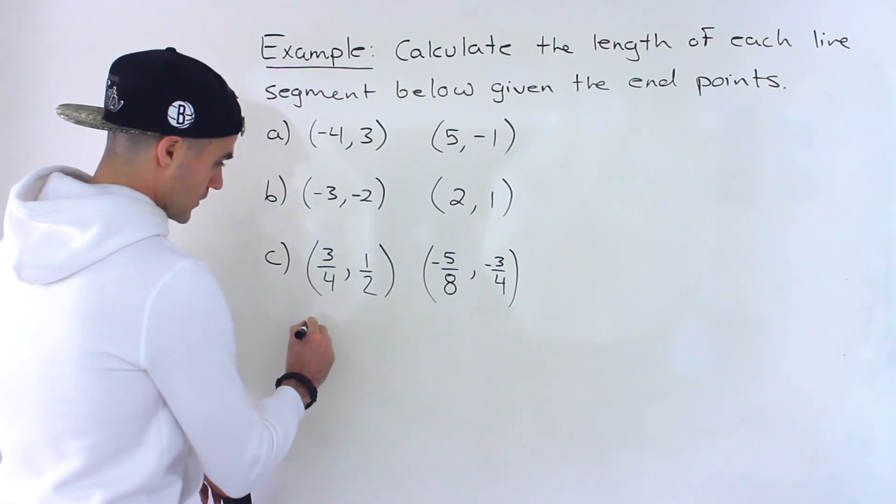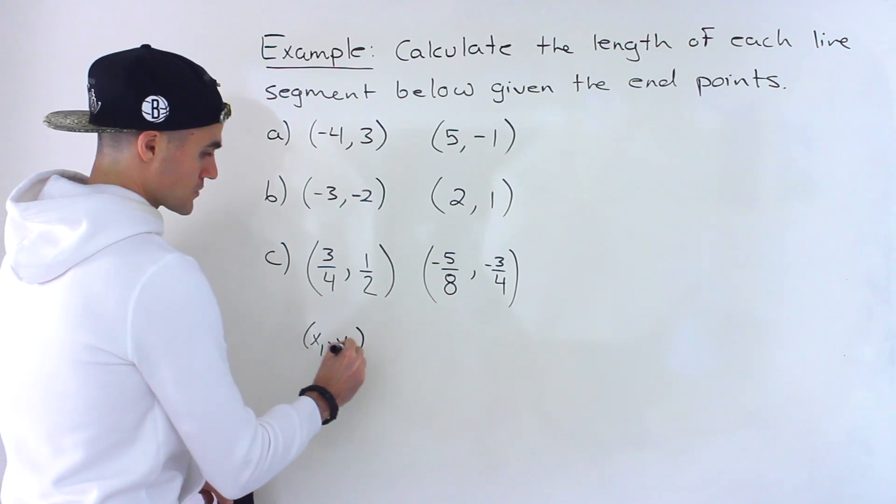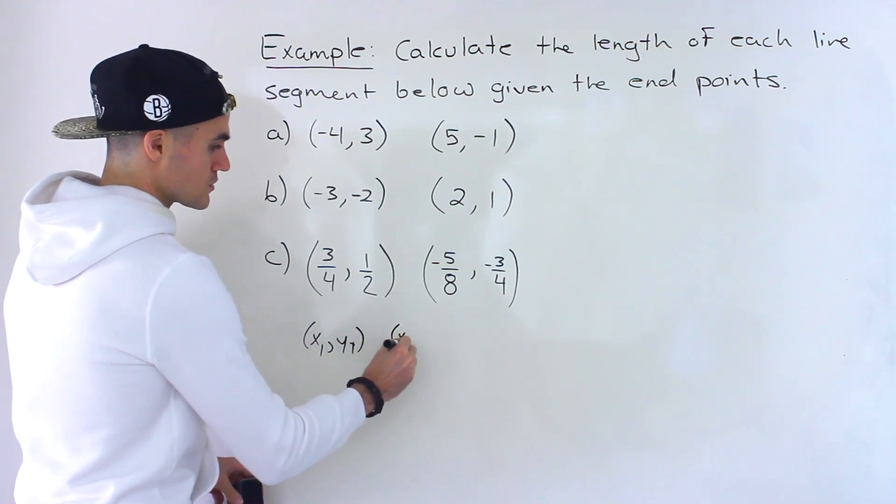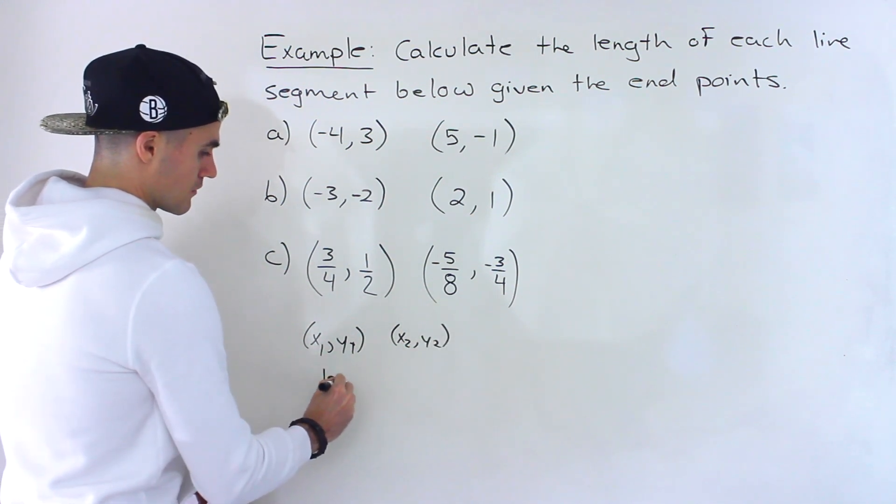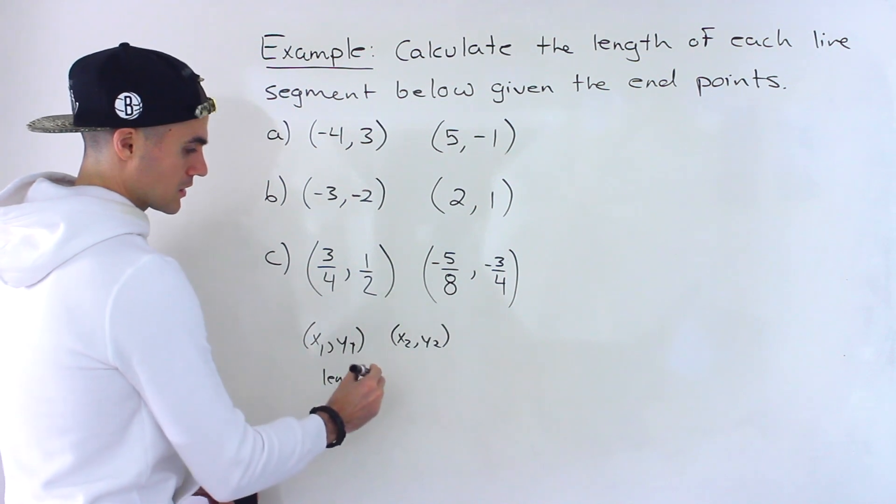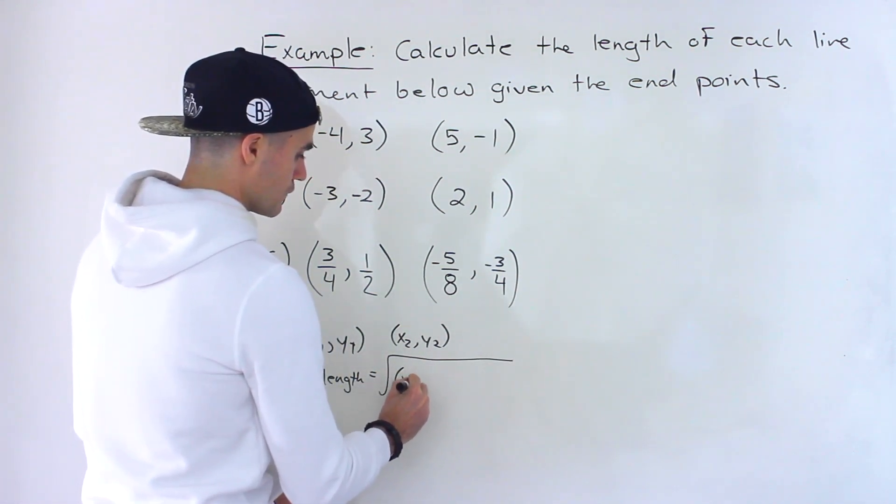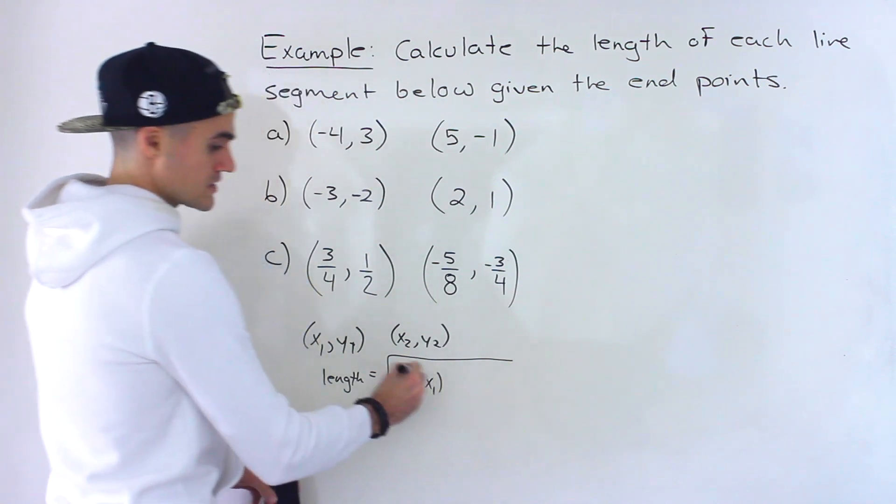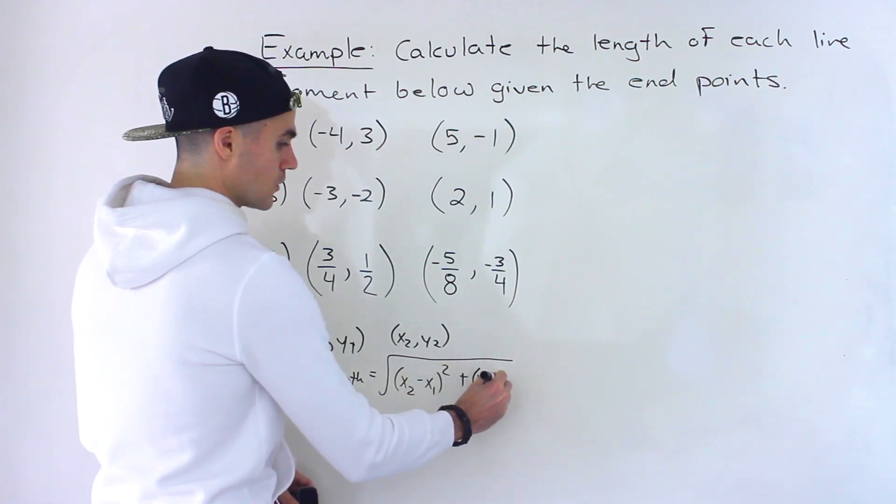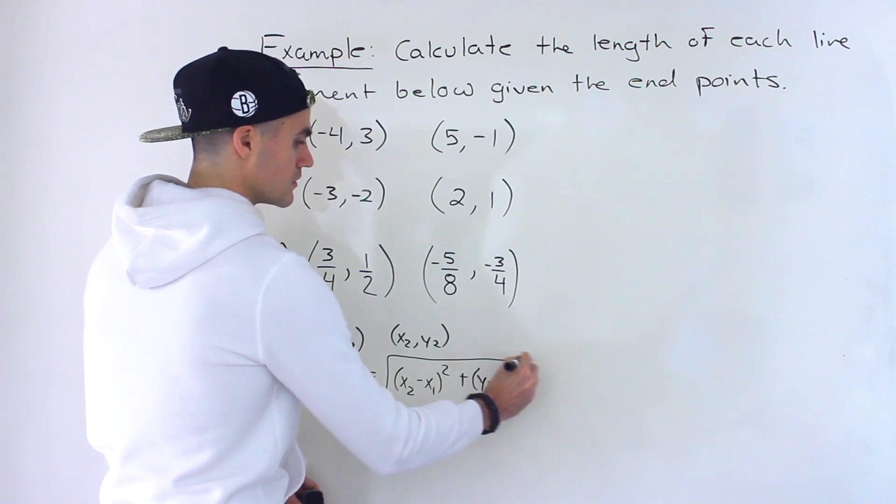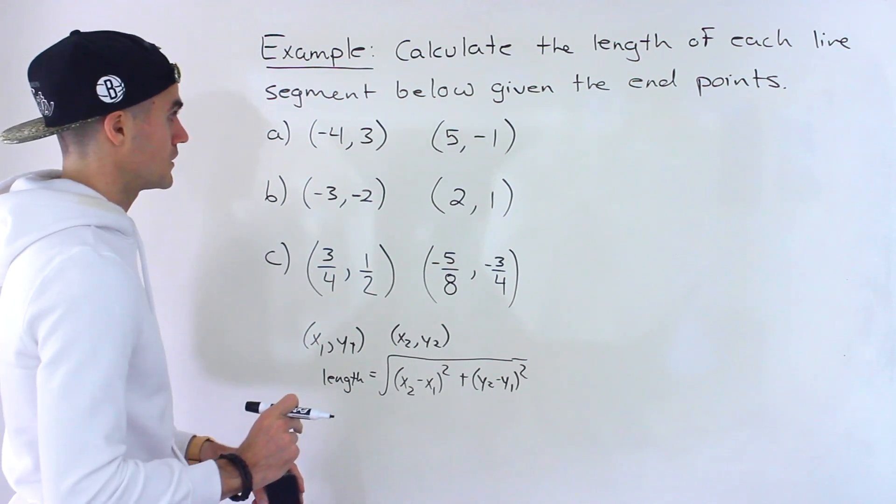Now just in general, as a quick review, if we have two endpoints of a line segment x1, y1, and then we have x2, y2, what's the length of this line segment going to be? Well, it's going to be the square root of the difference in the x value squared plus the difference in the y values squared. So this is the formula we're going to be using throughout the video.